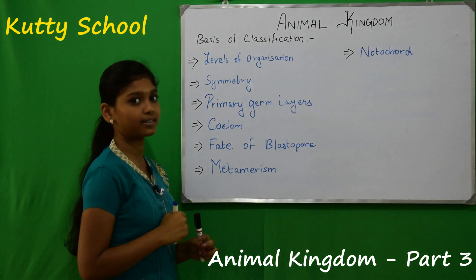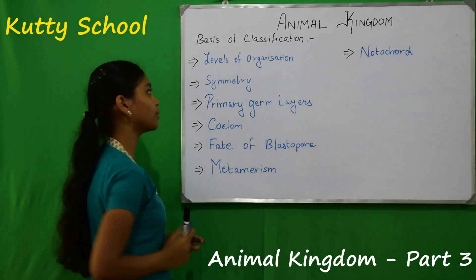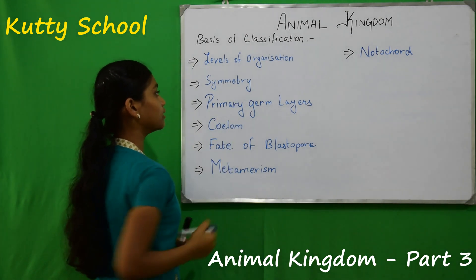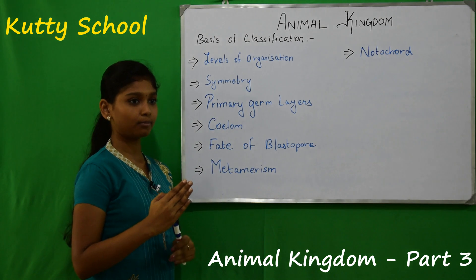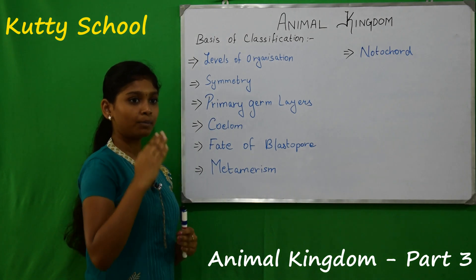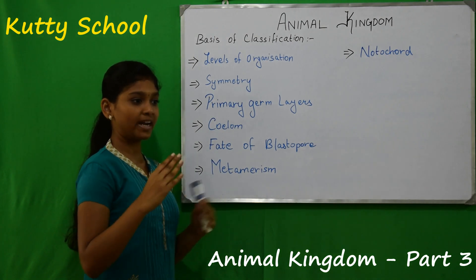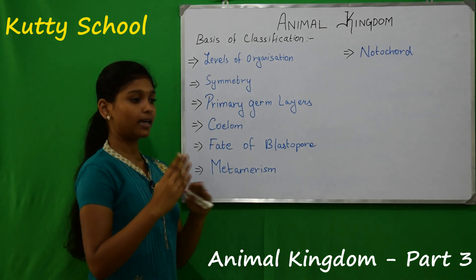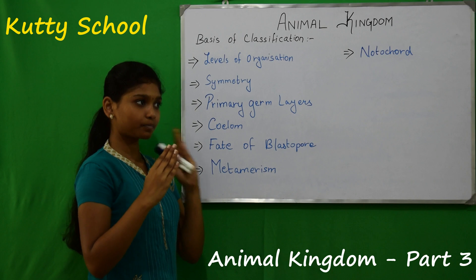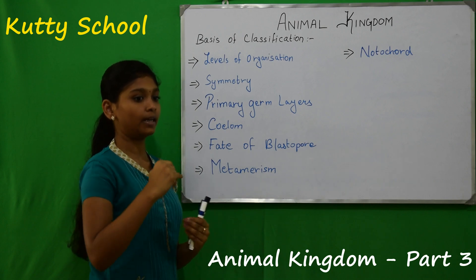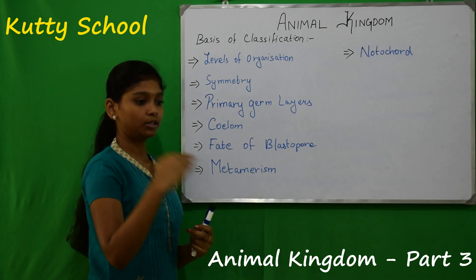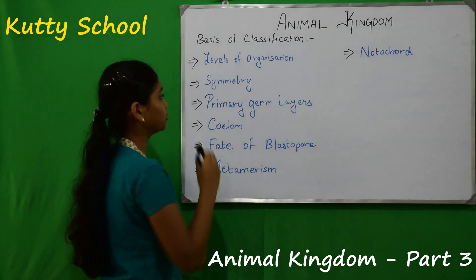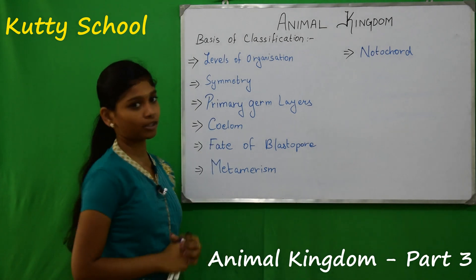We can see examples of cells. Then symmetry — symmetry of an organism. There is radial symmetry and bilateral symmetry. Bilateral symmetry means left and right, dividing into two equal parts.